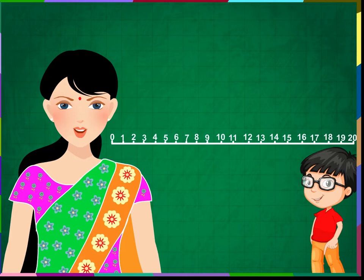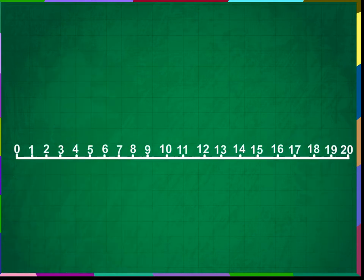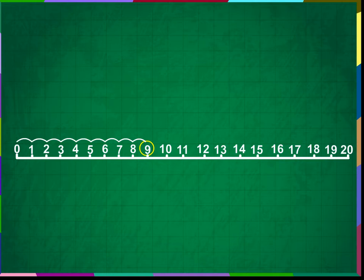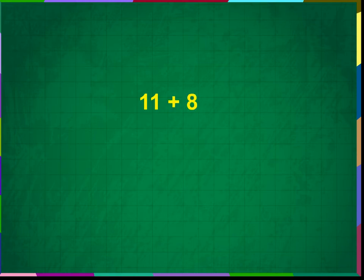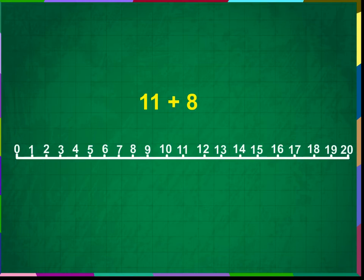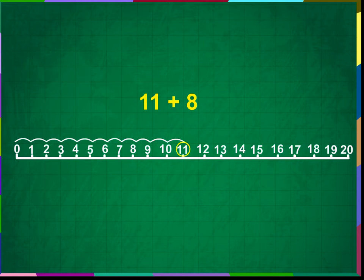Now let us add two numbers with the help of this number line. Add 9 and 8. Let us start from 0 and go up to 9 in one long jump, then jump 8 more numbers. Next, add 11 plus 8. Start from 0, go up to 11, then count 8 more small jumps. We have reached 19 — this is our answer.